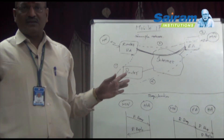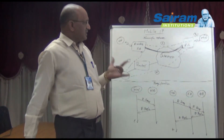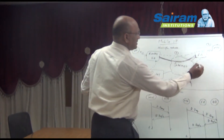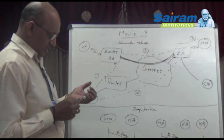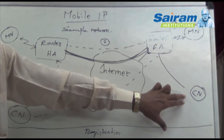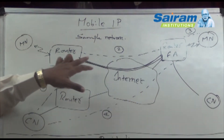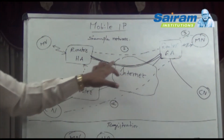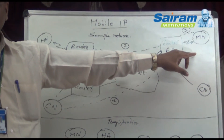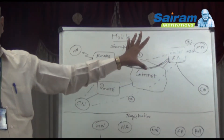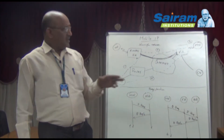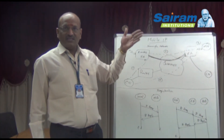The third process is the binding or optimization process. For the communication between the corresponding node and the mobile node, the actual communication takes place from CN through its router, to the home agent, which identifies that the mobile node is not there but elsewhere — causing the packets to travel back through another router to the mobile node. This kind of routing is called triangular routing, and it should be avoided. For that, we need a process called binding, done with the help of binding cache memory, where a portion of memory stores data about the mobile node's movement.